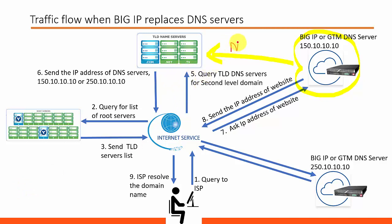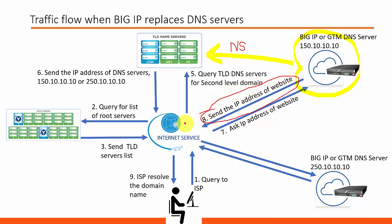The query will then forward to the Big IP DNS server. The DNS listener in Big IP DNS will check the request, and based upon the Big IP DNS configuration, the A record belonging to the domain name will be forwarded and resolved to the client.